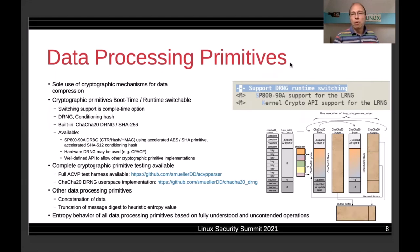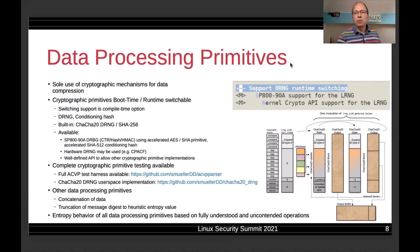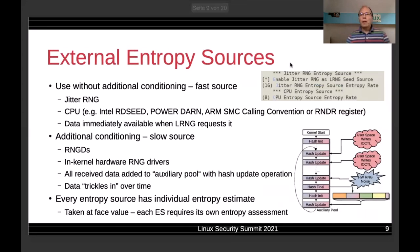For full disclosure, there is additional data processing to consider — the concatenation when building the temporary seed buffer, and the truncation of the conditioning message digest to the heuristic entropy value the data is supposed to contain. All of these primitives are considered fully understood with respect to their behavior towards entropy, and are completely uncontested when it comes to guaranteeing that entropy is maintained. With that, we have concluded the deterministic side of the LRNG. Now let's look at the non-deterministic part — the entropy sources.